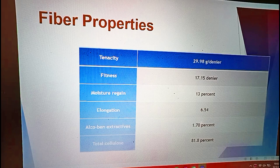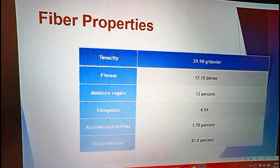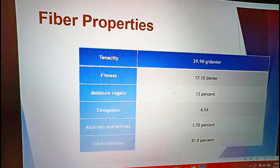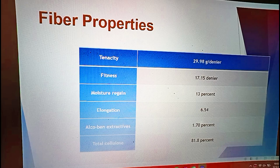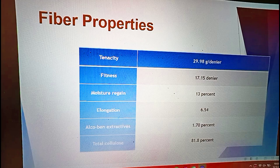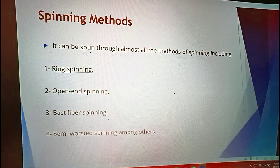The properties of banana fiber are as follows: tenacity is about 29.98 grams per denier; fineness is 17.15 denier; moisture regain is almost 13%, which is comparatively high compared to cotton; elongation is somewhat near to cotton at 6.54%; and total cellulose content is 81.8%.